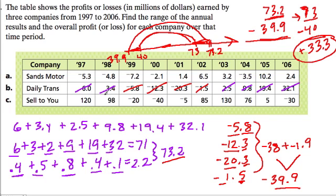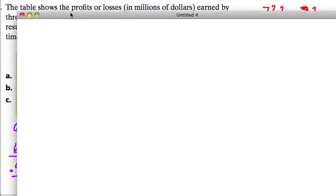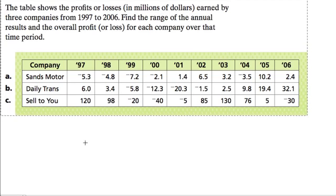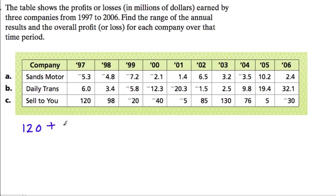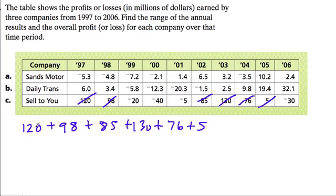We only have one more company to go. This company is called Sell to You. Again, start with the positives. I like to start with positive first. So 120, 98, 85, 130, 76, and 5. Let's add the hundreds first. So we have 100, 200, and then we have 20 and 30, that's 50. So that's 250, 255, plus 6 is 261, 266, plus 8 is 274.